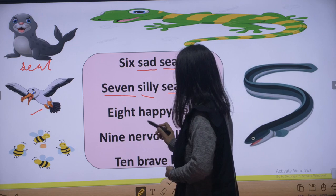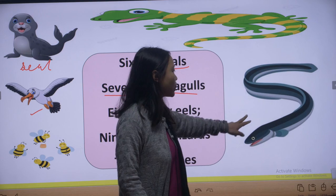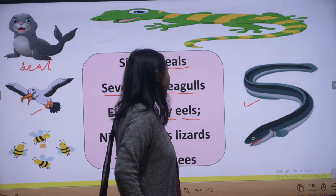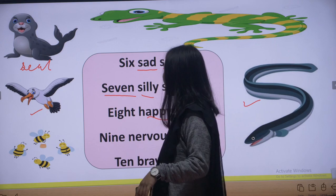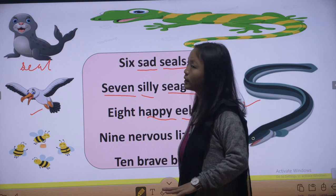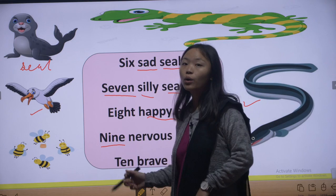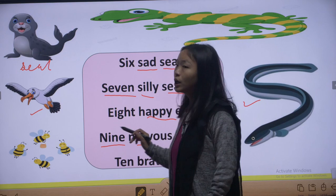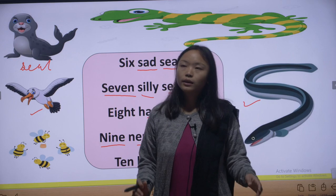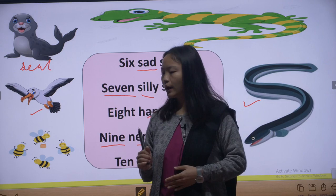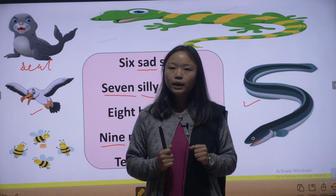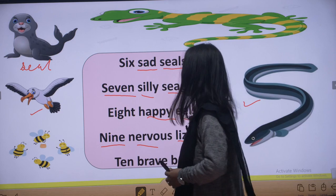Eight happy eels — the eels are happy. An eel looks like this — it is also a water animal, found in water. Nine nervous lizards — there are nine lizards and they are nervous. 'Nervous' means ghabraya hua — scared or anxious, like when you have to go on stage and perform.